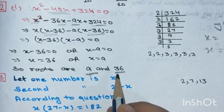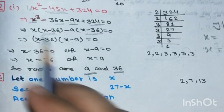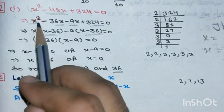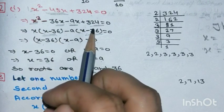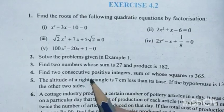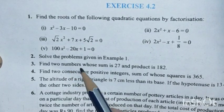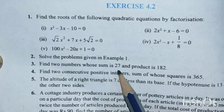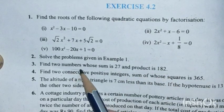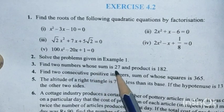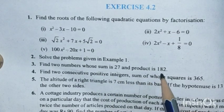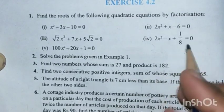So the answer is 9 and 36 marbles. Students, this is how we solve this type of question. Question 2's second part you will try on your own — if you have any doubt, you can ask in the comments. Now let's discuss Question Number 3: Find two numbers whose sum is 27 and product is 182.